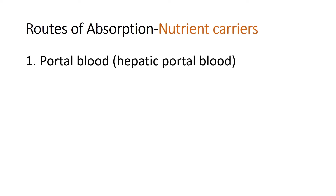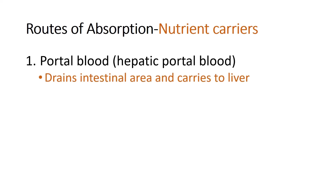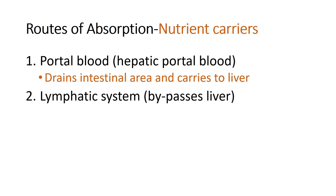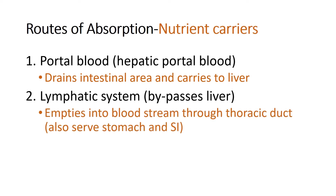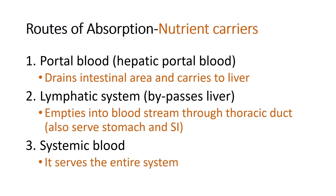There are three routes of nutrient absorption. The first is portal blood, also known as hepatic portal blood, which drains the intestinal area and carries nutrients to the liver. The second is the lymphatic system, which bypasses the liver and empties into the bloodstream through the thoracic duct, serving the stomach and small intestine — though this is not very functional in poultry birds. The third is the systemic blood, which serves the entire body.